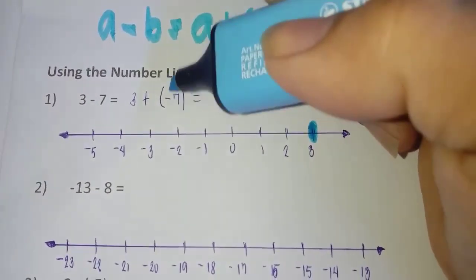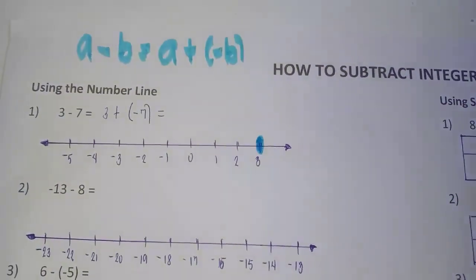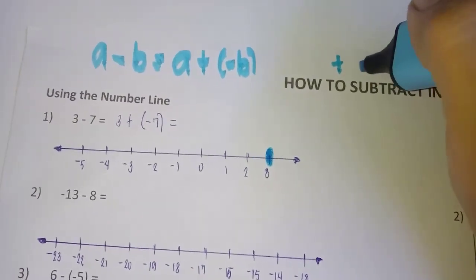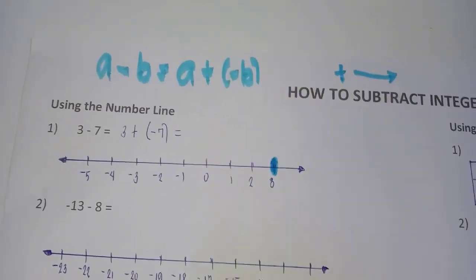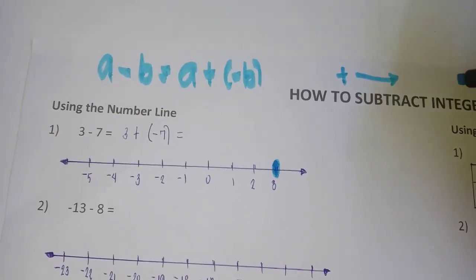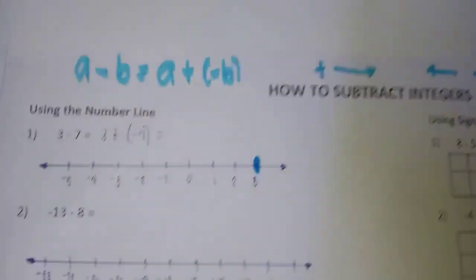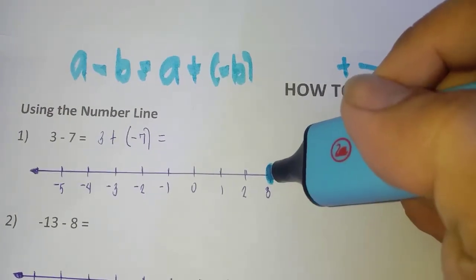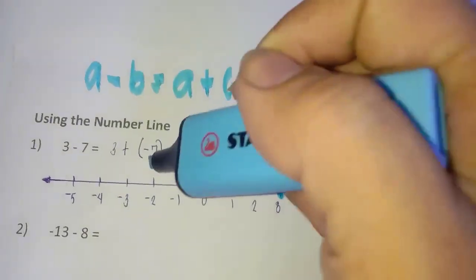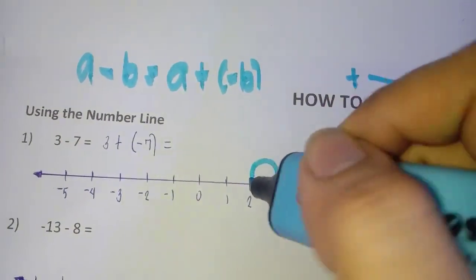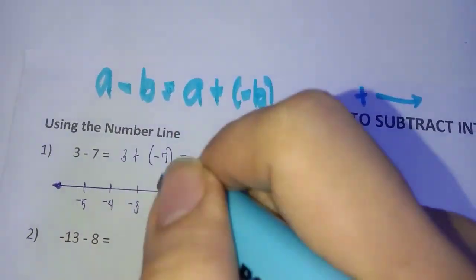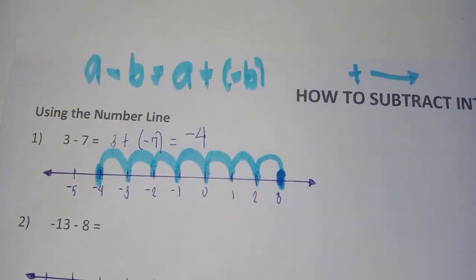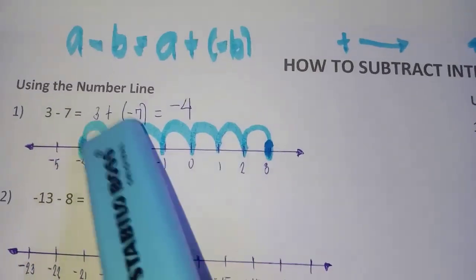The second addend is negative seven. When adding with the number line: if the addend is positive, move right; if negative, move left. Since negative seven is negative, we move seven units to the left from three: one, two, three, four, five, six, seven — and the answer is negative four.